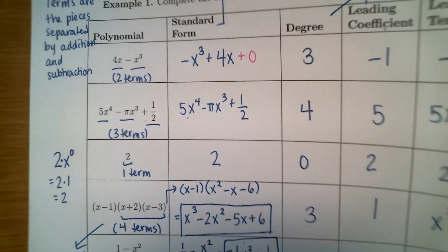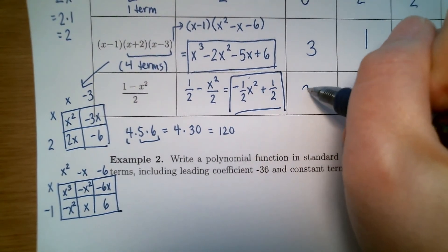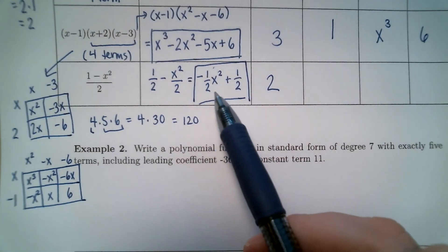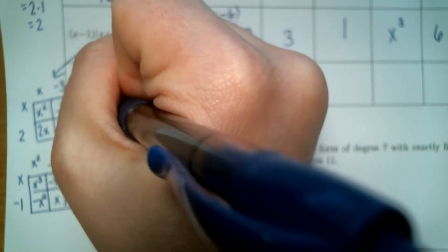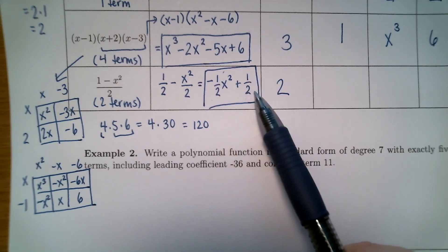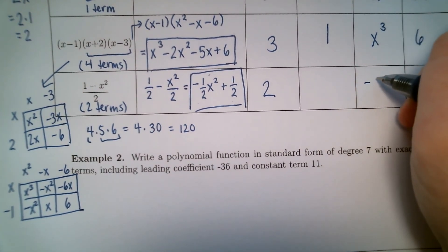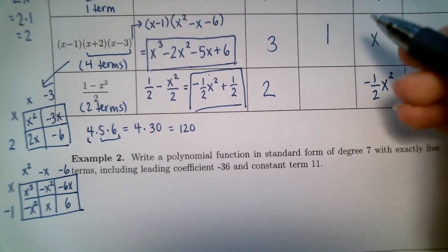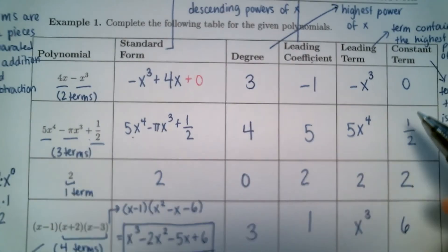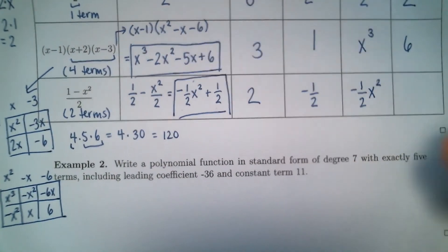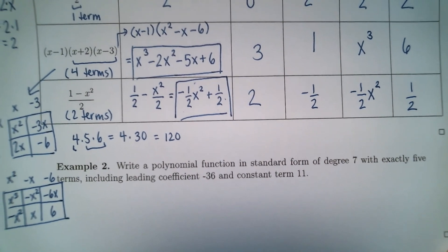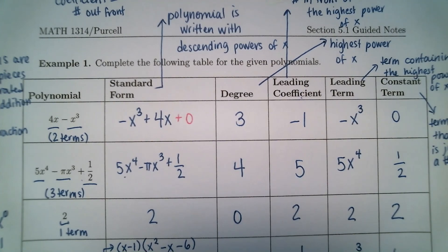Now it looks like a polynomial — you're adding or subtracting powers of x or just numbers, with no negative powers, fractional powers, roots, fractions with x in the denominator, or absolute value. The degree is 2. The leading term is negative one half x squared, the leading coefficient is negative one half, and the constant term is one half. Hopefully these five polynomials helped you understand the terminology associated with polynomials.